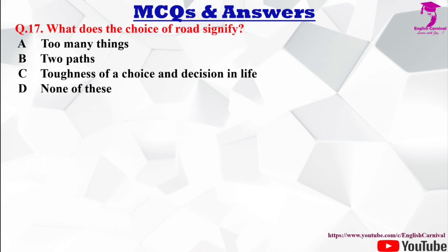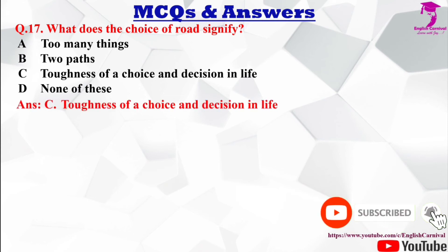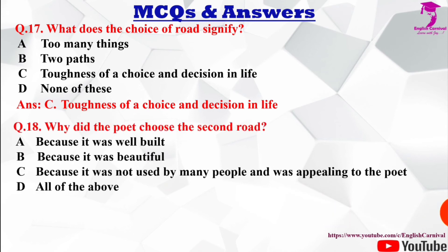Question number 17: What does the choice of road signify? Options: A) too many things, B) two paths, C) toughness of choice and decision in life, D) none of these. The correct answer is C — toughness of choice and decision in life.